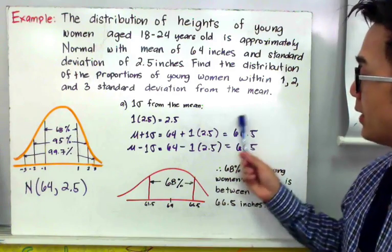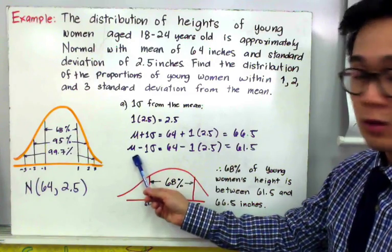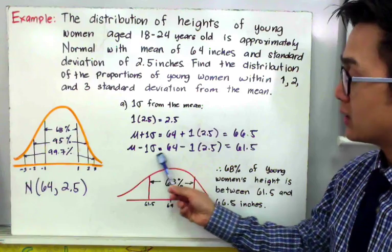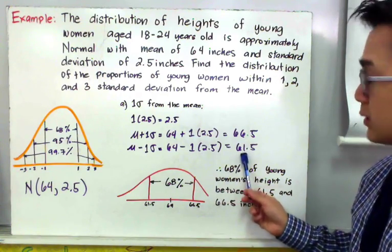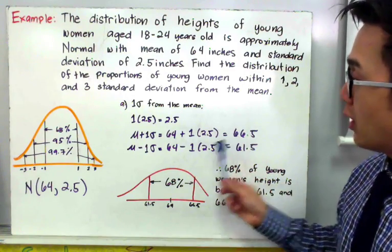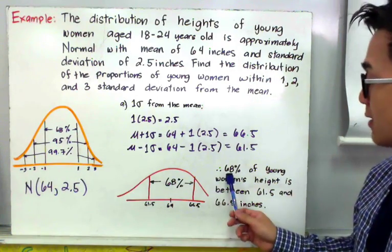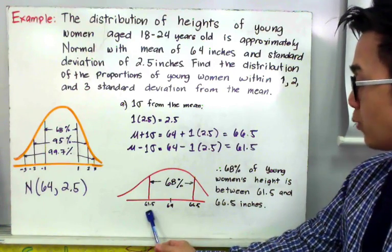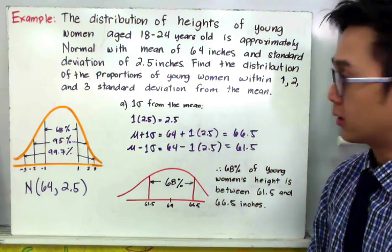This is our upper limit for the first standard deviation. For the lower limit, we have the mean minus 1 standard deviation: 64 minus 1 times 2.5, which equals 61.5. Therefore, 68% of young women's height is between 61.5 inches and 66.5 inches, according to the empirical rule.